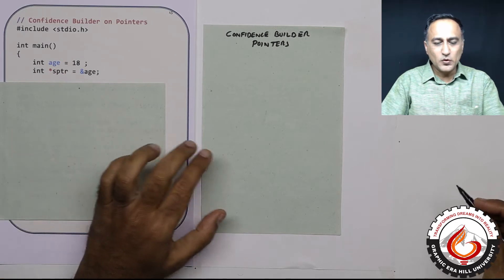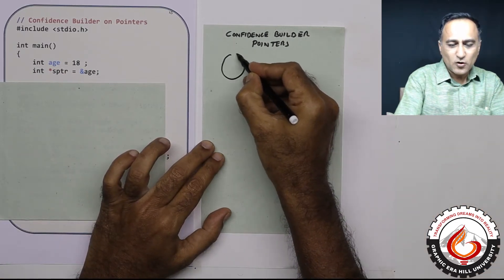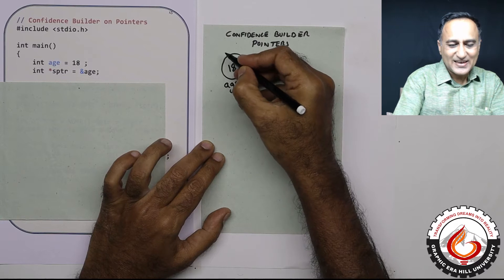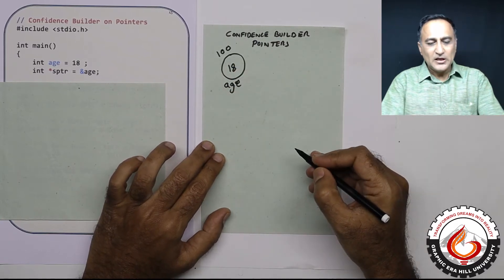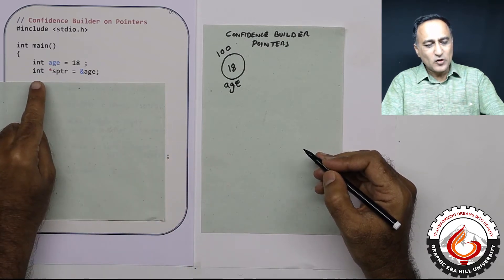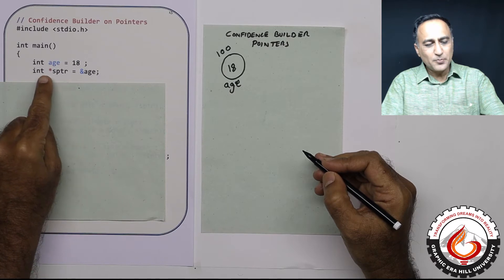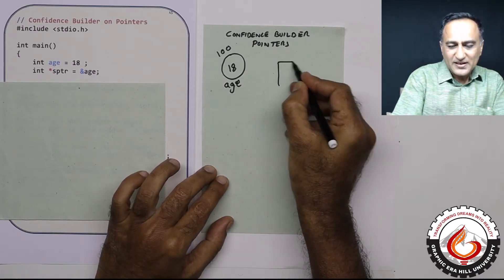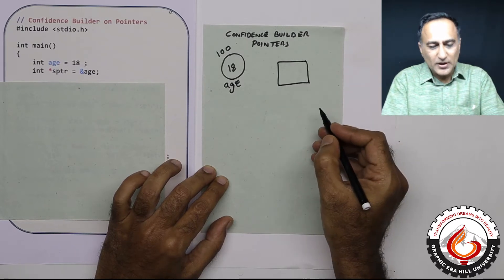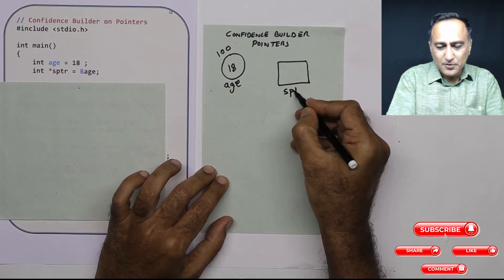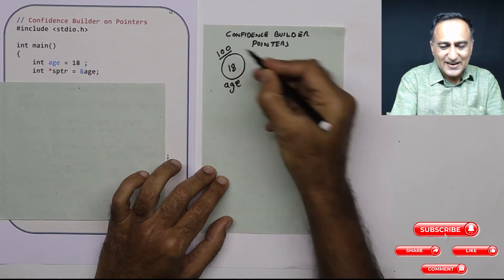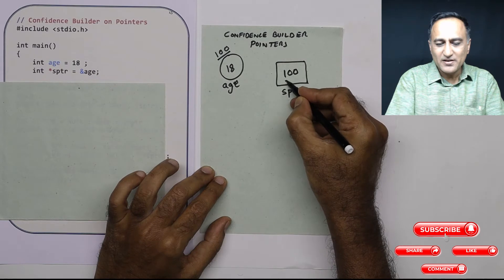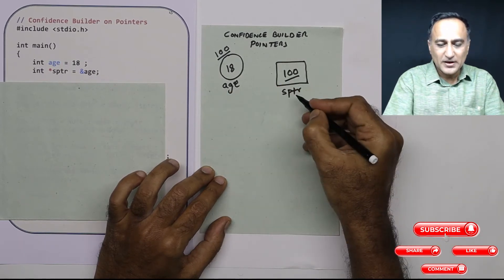Here I have defined int age equal to 18. I'll draw a variable whose name is age, whose value contained is 18, and let us say the address of age is 100. In the next line I have declared sptr, which is a pointer to an integer type of variable. Since it's a pointer, let me represent it in a square box so that we are very clear that it is a pointer type of variable. It contains the address of age, which is 100. So sptr contains 100, but 100 is not a number — it's the address of age.